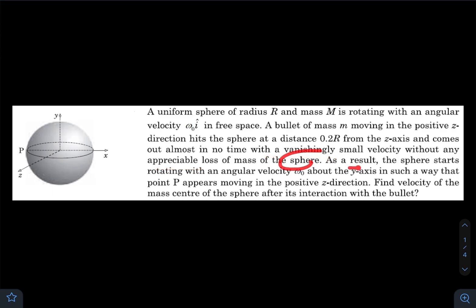As a result, the sphere starts rotating with an angular velocity ω₀ about the y-axis. So now it becomes ω₀ j-cap in such a way that point P appears moving in the positive z direction.